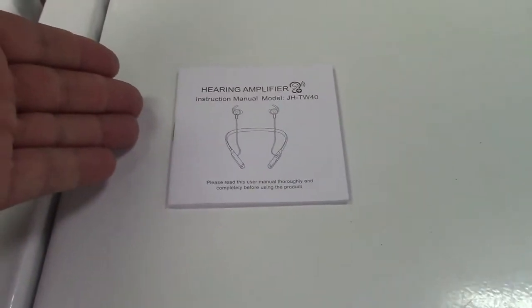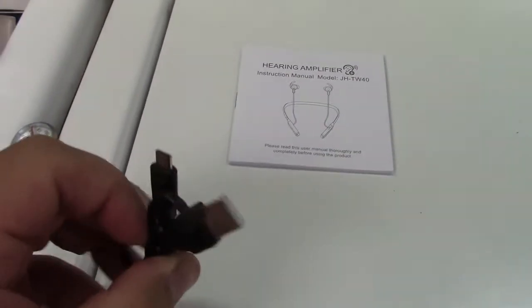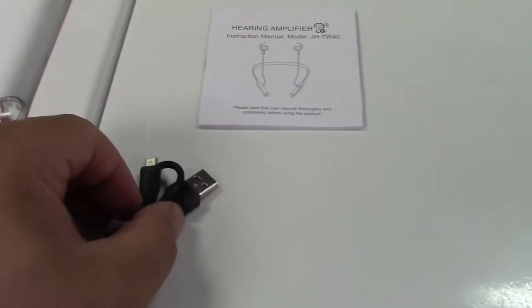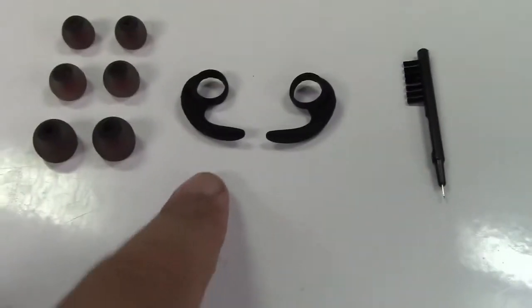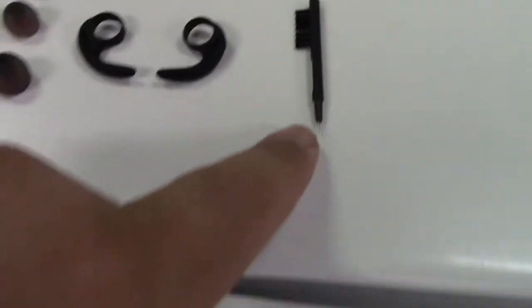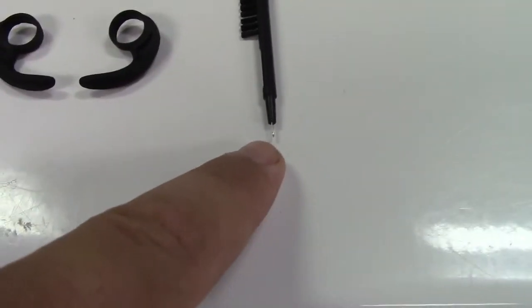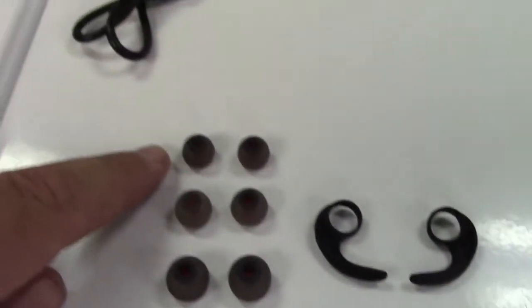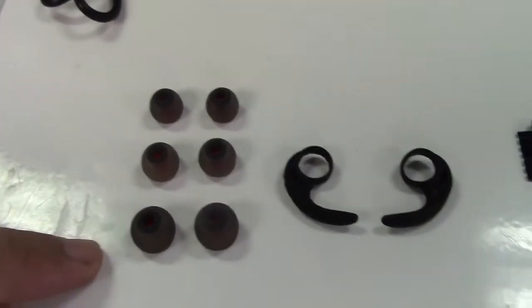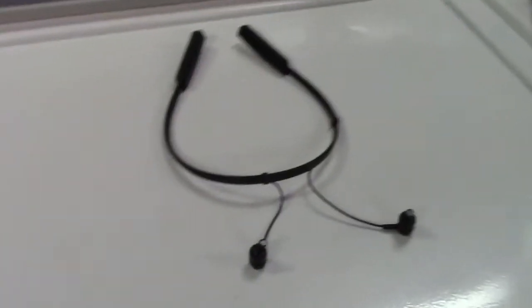In the box you get the instruction manual, charging cable, USB to micro USB. They give you a couple of ear hooks, a cleaning brush with a point at the end, three different size ear caps, and of course the unit itself.